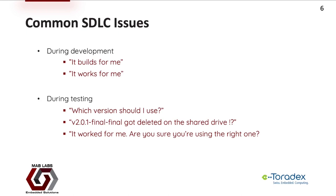During testing, it can get even worse since multiple teams are involved and one team may not have the expertise of the other, or there may be problems with documentation. A common quote I've heard is, 'well, which version should I use?' Additionally, because of potential last-minute issues and pressing deadlines, versioning may go out the window, and we typically see file names like v2.0.1-final-final. Even worse, these binaries are stored in a file store with no permission control — there have been instances where a particular target version for testing is no longer present because it got accidentally deleted. There's always the back and forth about whether the test team is using the right version or whether the development team has actually uploaded the right version.